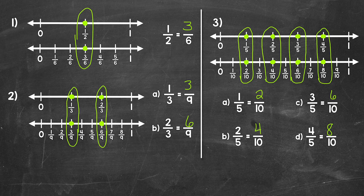Moving on to number 3: part A, one-fifth is equivalent to two-tenths. Part B, two-fifths is equivalent to four-tenths. Part C, three-fifths is equivalent to six-tenths. And lastly, part D, four-fifths is equivalent to eight-tenths.